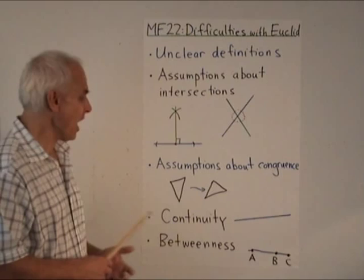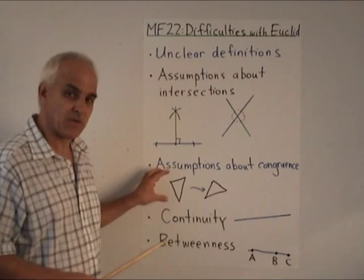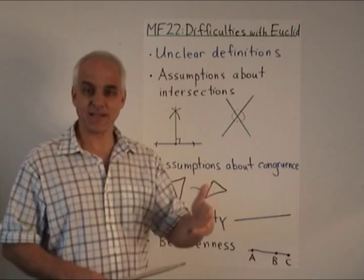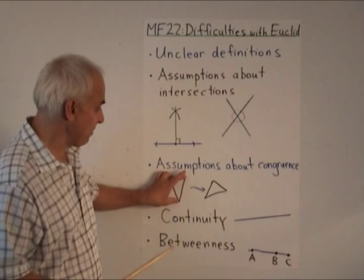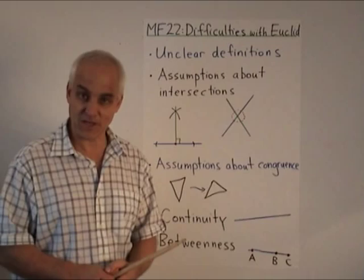Other assumptions are related to congruence. Euclid uses proper motions — things like translations, rotations — implicitly throughout his work. This is the way he describes equality between geometrical objects. But he never says very clearly what he means by such a transformation, and what kind of transformations we're actually considering.